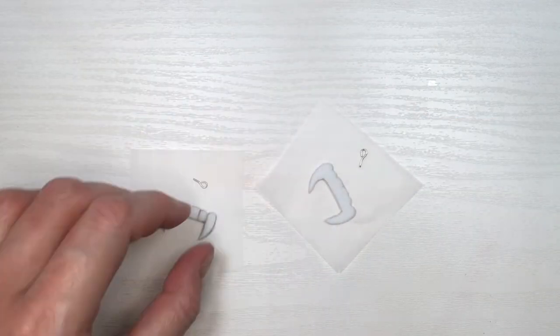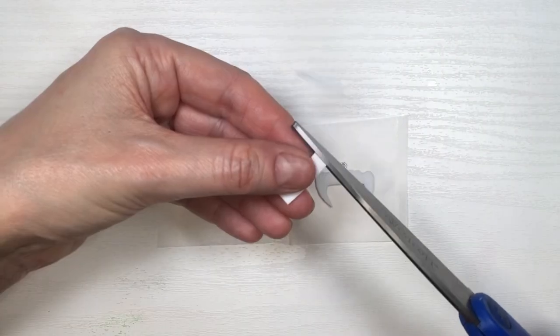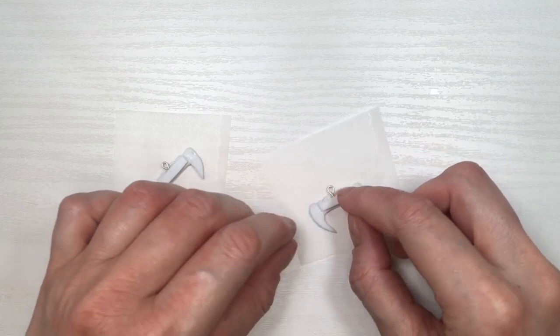I'm going to be gluing them using my crazy glue, gluing them on the back, and then just cutting small strips of that same foamy paper, just so that I can glue them on the back, and so my eye pins are not visible.